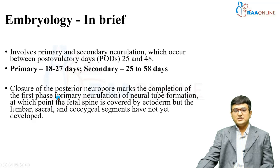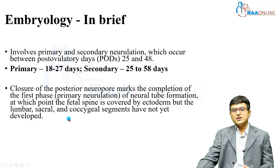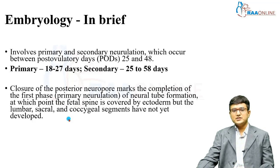After primary neurulation ends, secondary neurulation begins. At this point the fetal spine is fully covered by ectoderm, and only the lumbosacral and coccygeal segments have not yet developed. So at the end of primary neurulation we have a fully formed spinal cord except for the sacral, coccygeal, and terminal segments.